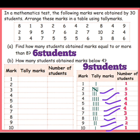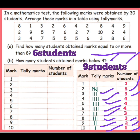Next, see the question: find how many students obtained marks equal to or more than 8. For 8 and above: 3 plus 2 is 5, plus 1 is 6. So 6 students obtained marks equal to or more than 8. Next, how many students obtained marks below 4? 4 is less than: total 9 students obtained marks below 4. This is the final answer.